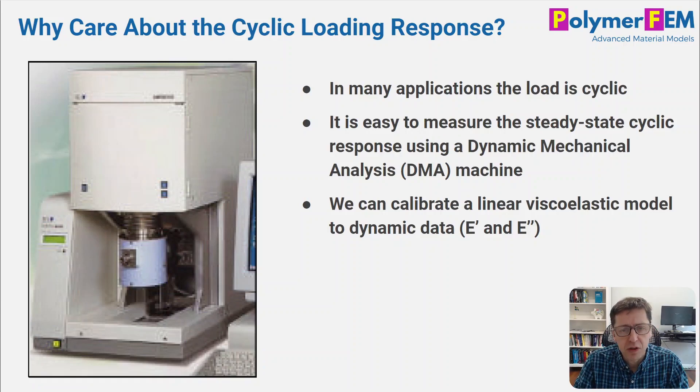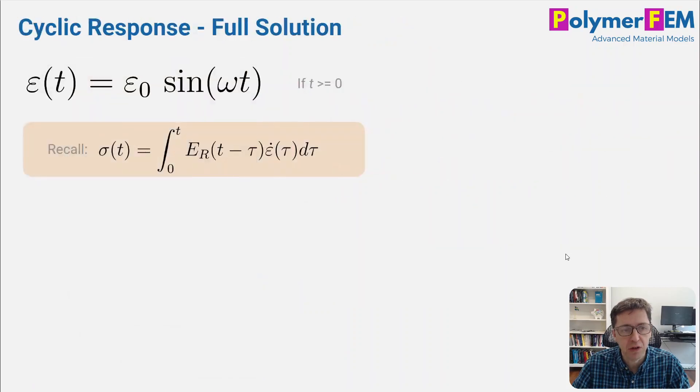Another reason is that it's actually very easy to measure the dynamic response of a material, a polymer, using a dynamic mechanical analysis, a DMA machine, that can measure directly the storage and the loss modulus for you. So it's good to understand what these values mean and how you can use it to calibrate a material model, and that's what I want to talk about here today.